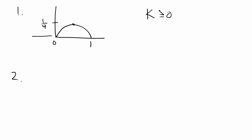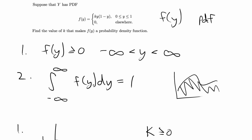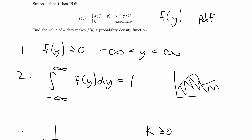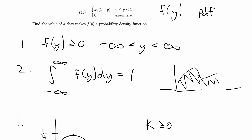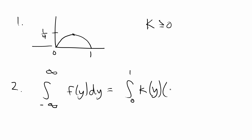Now we want to find the exact value of k using the second condition. We integrate from negative infinity to infinity of f of y dy, set that equal to 1, and solve for k. Since the function is 0 everywhere except from 0 to 1, we only need to integrate from 0 to 1. So the integral from 0 to 1 of k times y times (1 minus y) dy is set equal to 1.